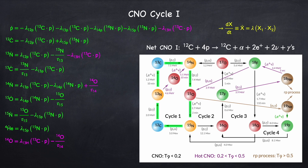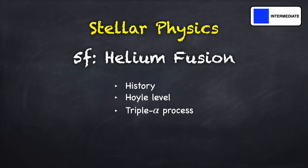Now you understand, at least qualitatively, how the CNO cycle works. And if you watched the previous video on the proton-proton chain, you now understand the basics of hydrogen fusion in general. The next nuclear burning stage is helium fusion, and we're going to go over that in the next video. If you enjoyed this video and would like to see more, be sure to like and subscribe and click the bell to be notified for the release of future videos. Thanks for watching.